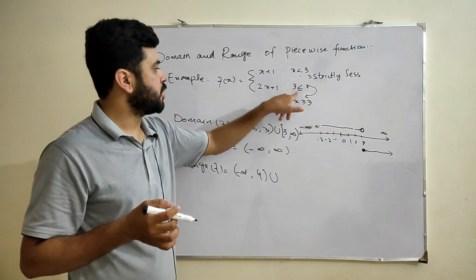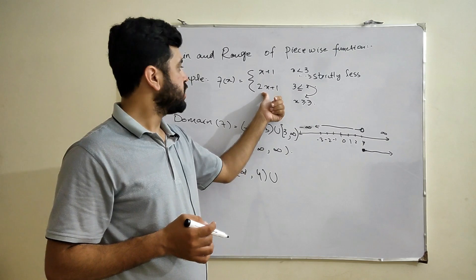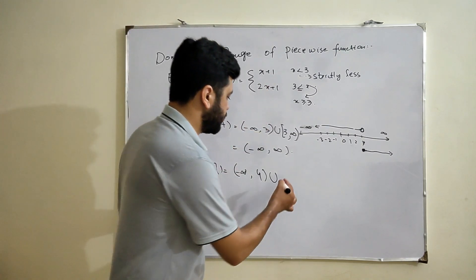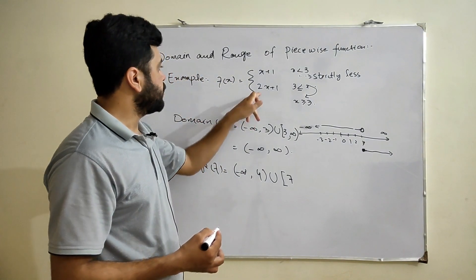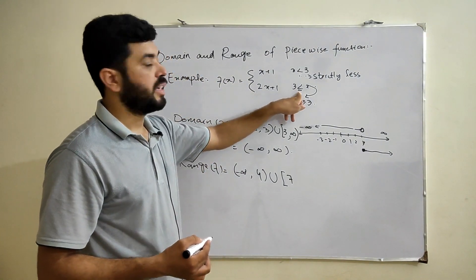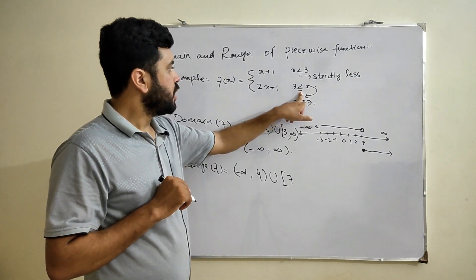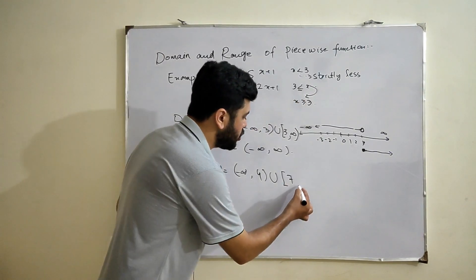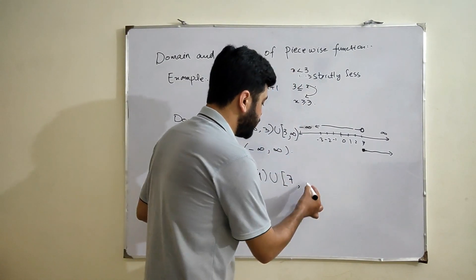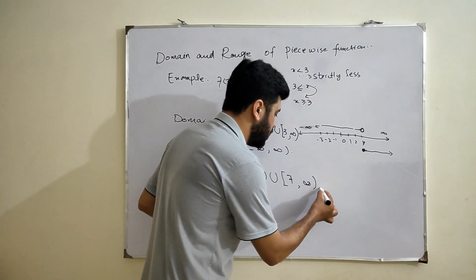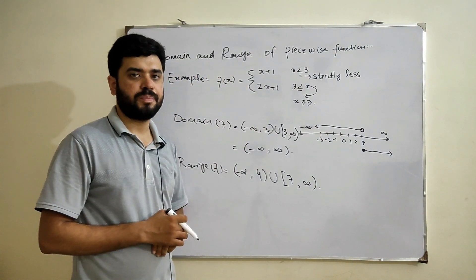For the second portion, putting x equals 3 into 2x plus 1 gives 2 times 3 equals 6, plus 1 equals 7. The value 7 is included because there is an equality — not strictly less. Moving from 7 towards positive infinity, we get the second part of the range. This gives us the complete range of this piecewise function.